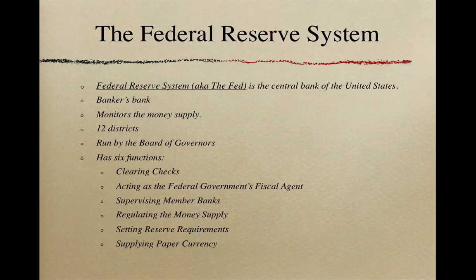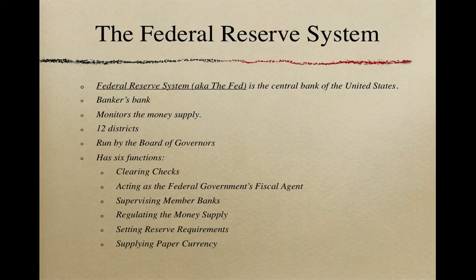The Federal Reserve System is the central bank of the United States, also known as the Fed. The Federal Reserve is the Banker's Bank and it monitors the money supply. Congress set up the Federal Reserve System in 1913. Its mission is to provide the United States with a safe, flexible, and stable monetary and financial system. The Federal Reserve System consists of 12 regional Federal Reserve banks and 25 branch banks, and about 5,000 member banks. The Federal Reserve is run by the Board of Governors, which supervises the 12 district banks and regulates activity of the member banks.